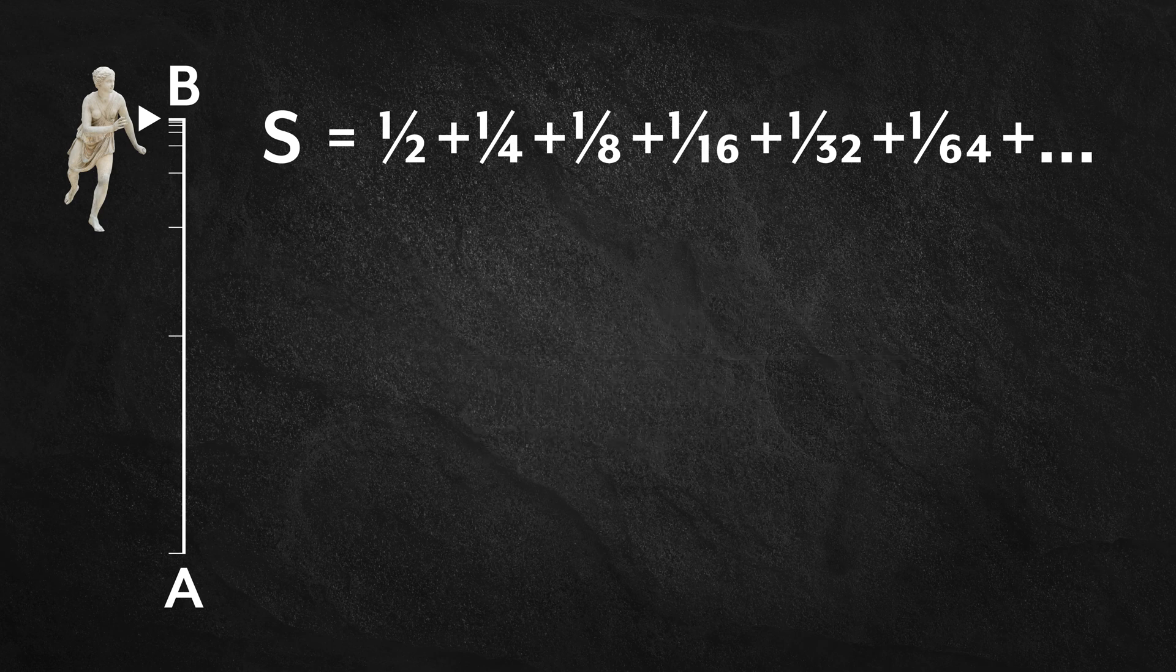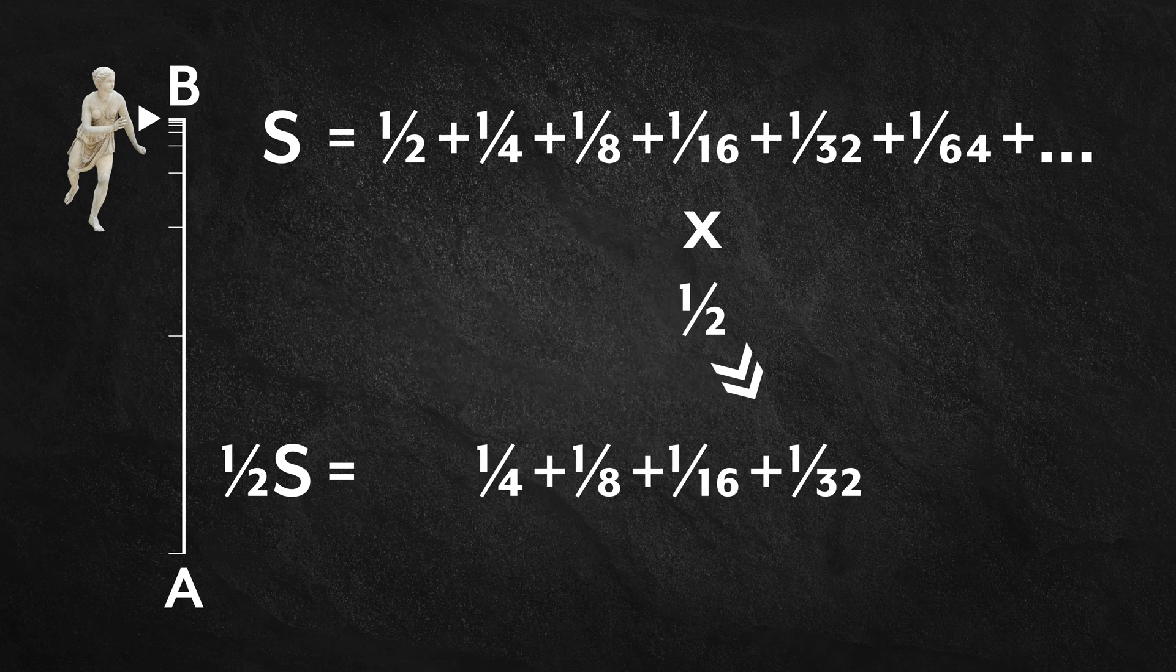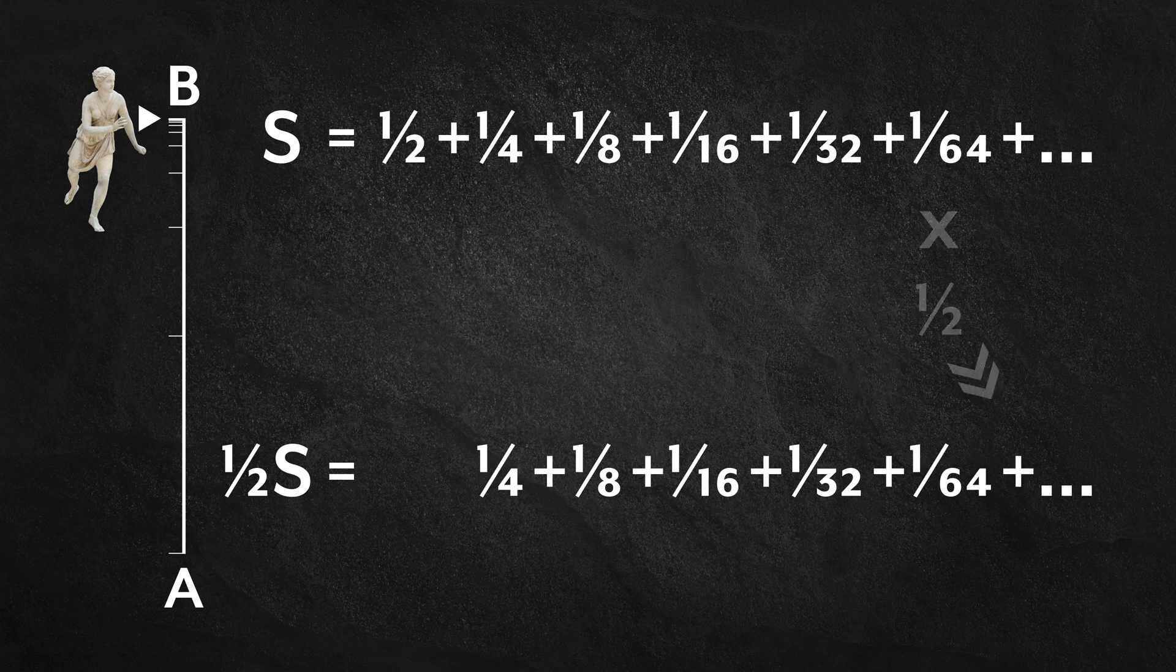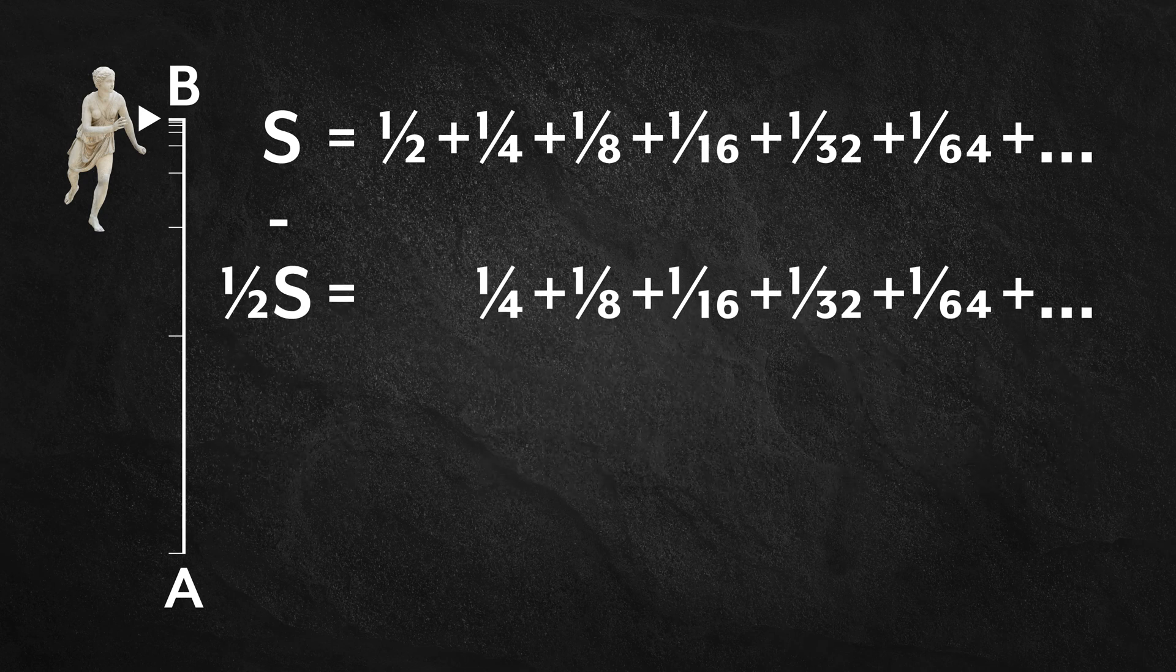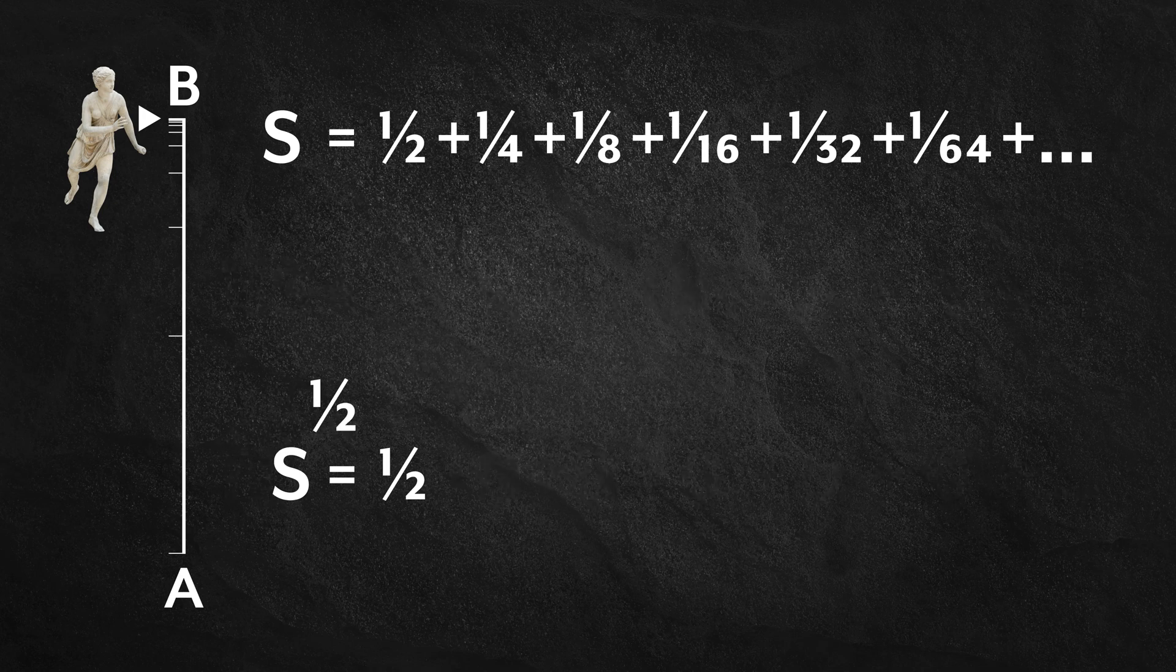Let's multiply this equation by a half. And you get half S equals a quarter plus one-eighth plus one-sixteenth plus one-thirty-second plus one-sixty-fourth and so on. The top equation minus the bottom equation is a half S equals a half, therefore S equals one.